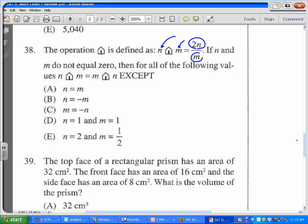So twice the first one divided by the second one, provided that n and m do not equal zero. And for all the following values, n symbol m is equal to m symbol n except for one of these. Let's go ahead and take a look at this.